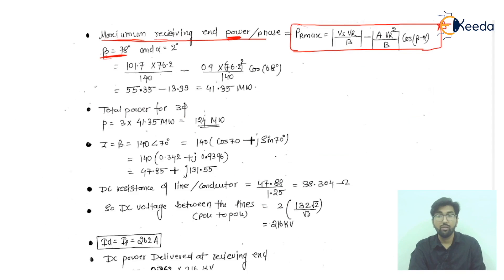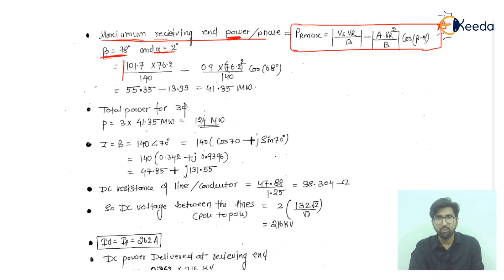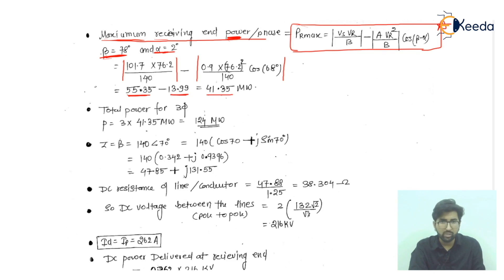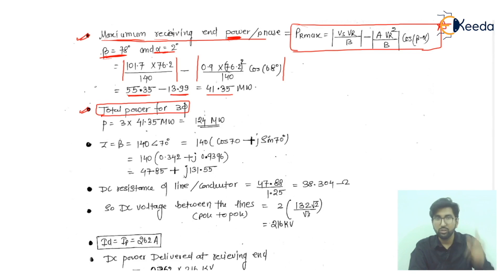With α = 2° (from A = |A| ∠α) and substituting all values — VS, VR, and B = 140 — we get 55.35 minus 13.99, which after simplification gives 41.35 MW per phase. For total three-phase power, we multiply by 3 to get 124 MW.